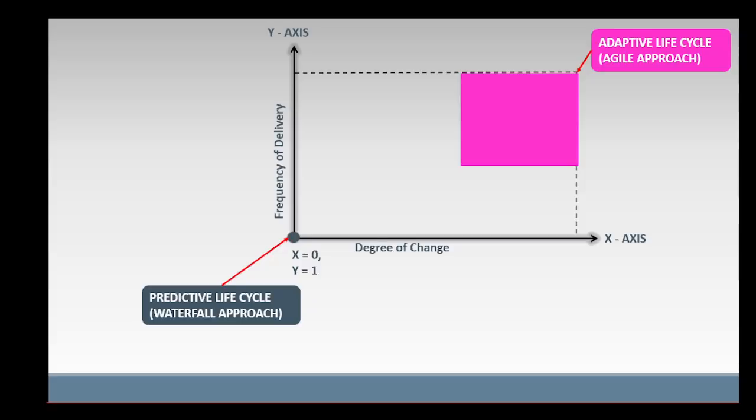Adaptive life cycle or agile approach is tentatively at the shaded area of the graph where the degree of change is high and the frequency of delivery is high or multiple small deliveries.